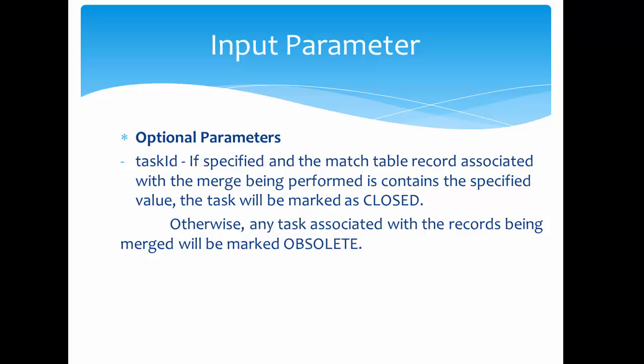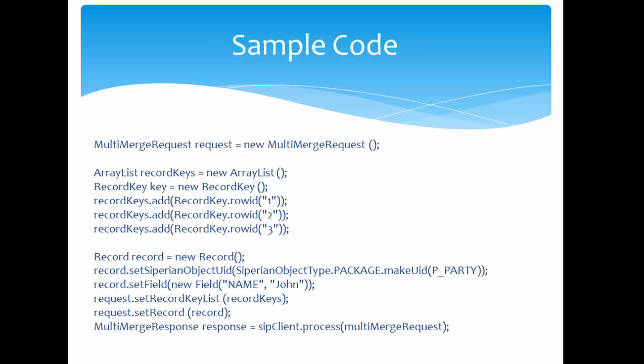Another optional parameter is Task ID. As discussed with the Merge API, Task ID is also optional in the Multi Merge API. If you specify a Task ID and that record is part of a match job — meaning it is populated in the match table — and you perform a Multi Merge operation on such a record, then that Task ID will be marked as closed. If the records are not part of the match table but still get merged, the associated task will be marked as obsolete.